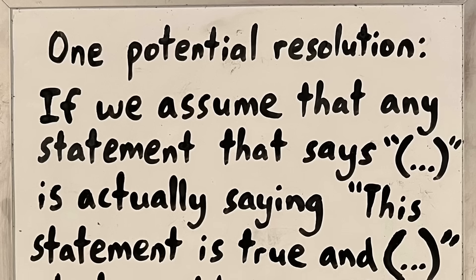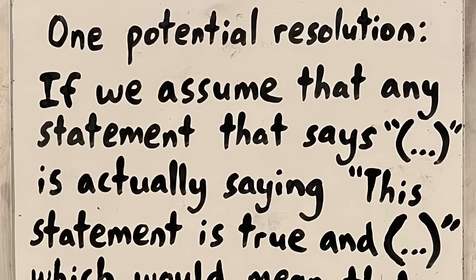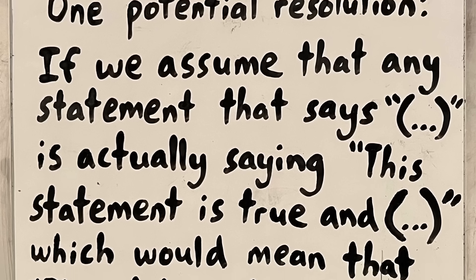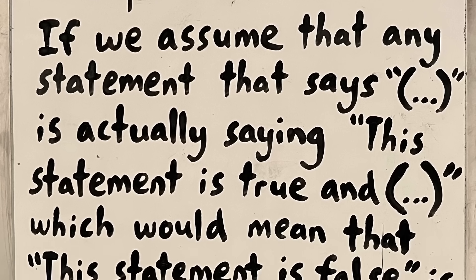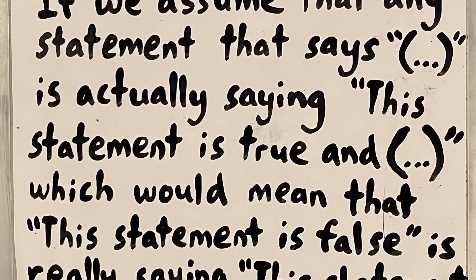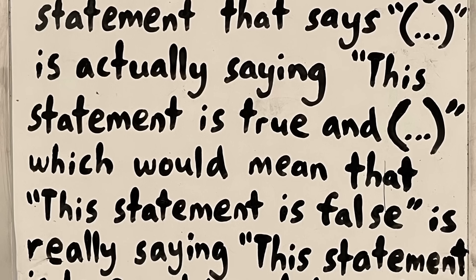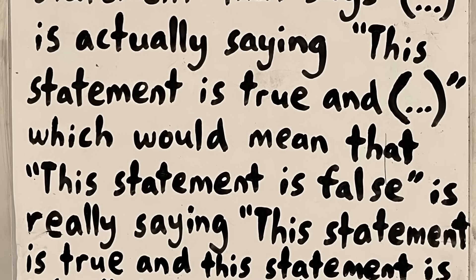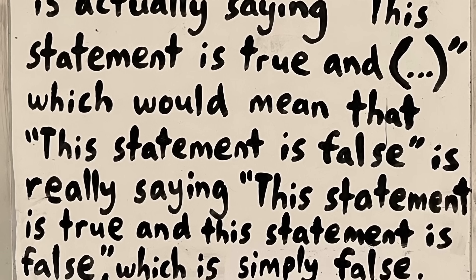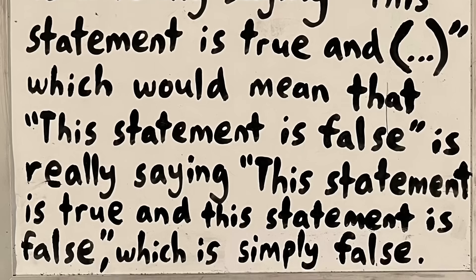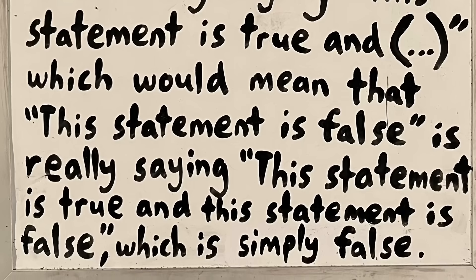Some mathematicians think the liar paradox isn't a paradox at all. They argue that any statement normally just saying 'so-and-so' really says 'this statement is true and so-and-so' — that every statement secretly has a 'this statement is true and' in front of it. That would mean 'this statement is false' is really saying 'this statement is true and this statement is false,' which we can clearly assign false to without a paradox. But many mathematicians don't believe that argument and think statements don't automatically have that prefix.